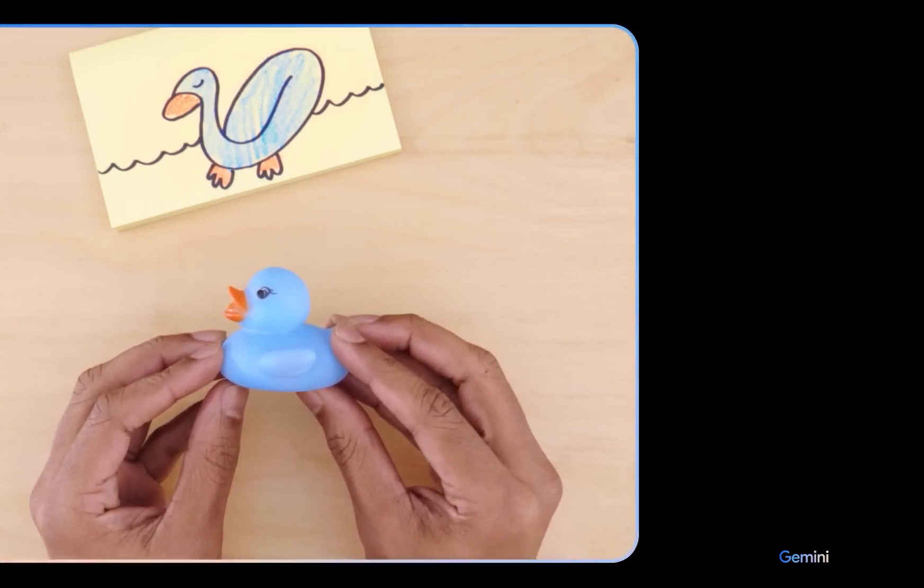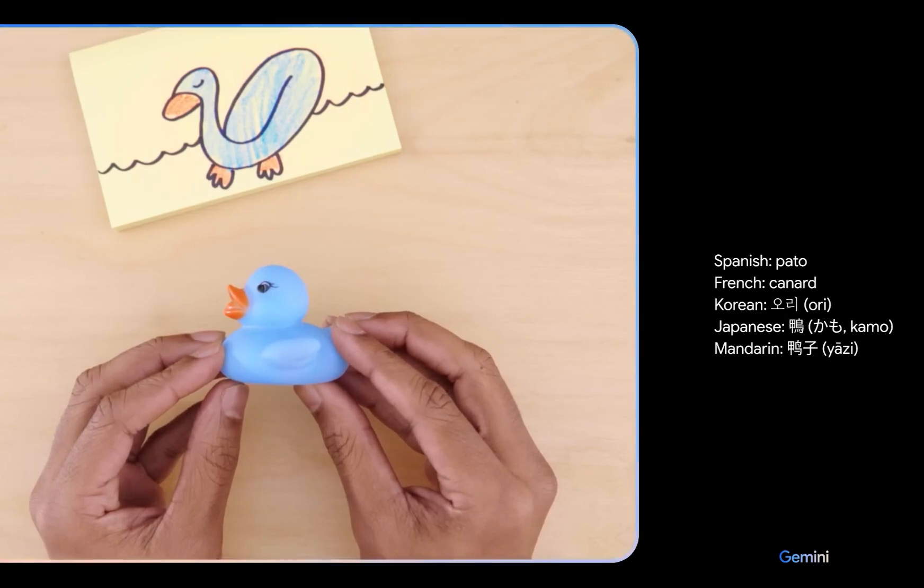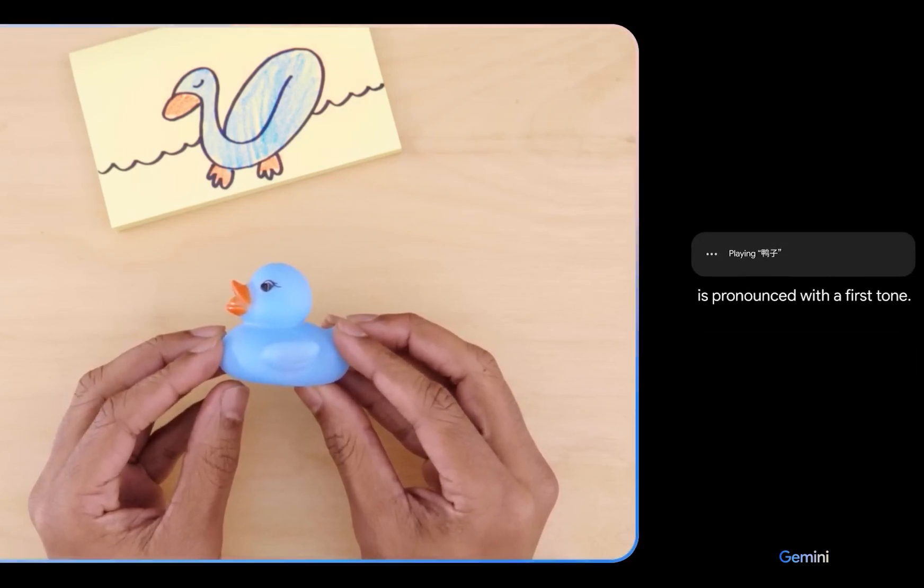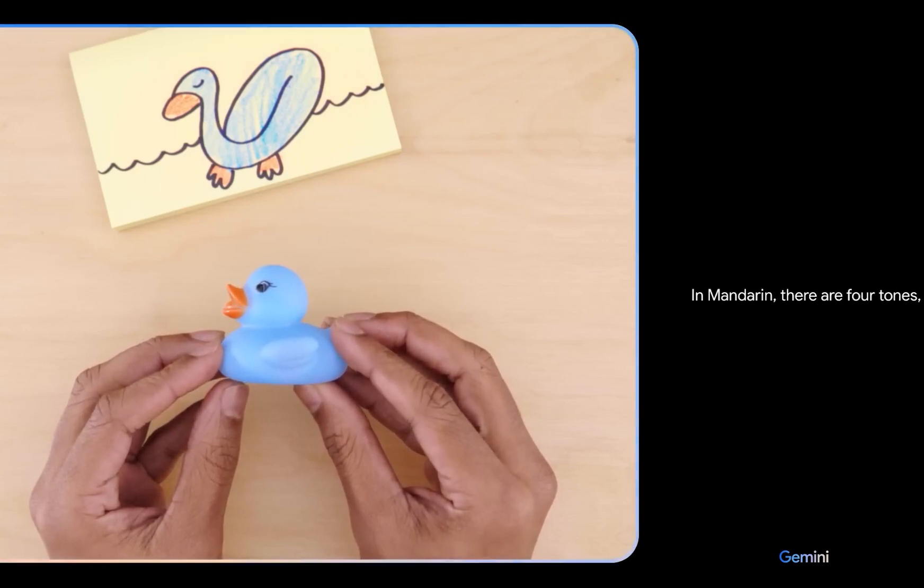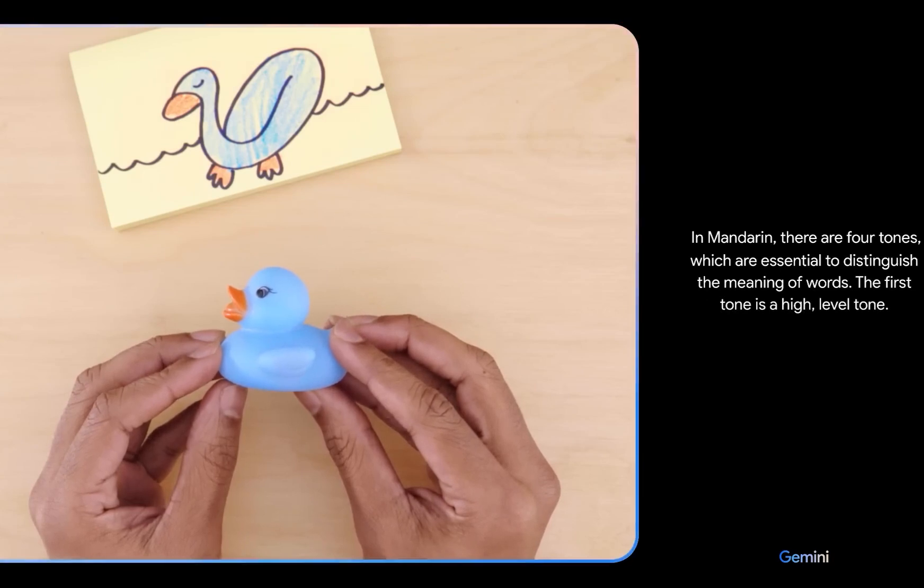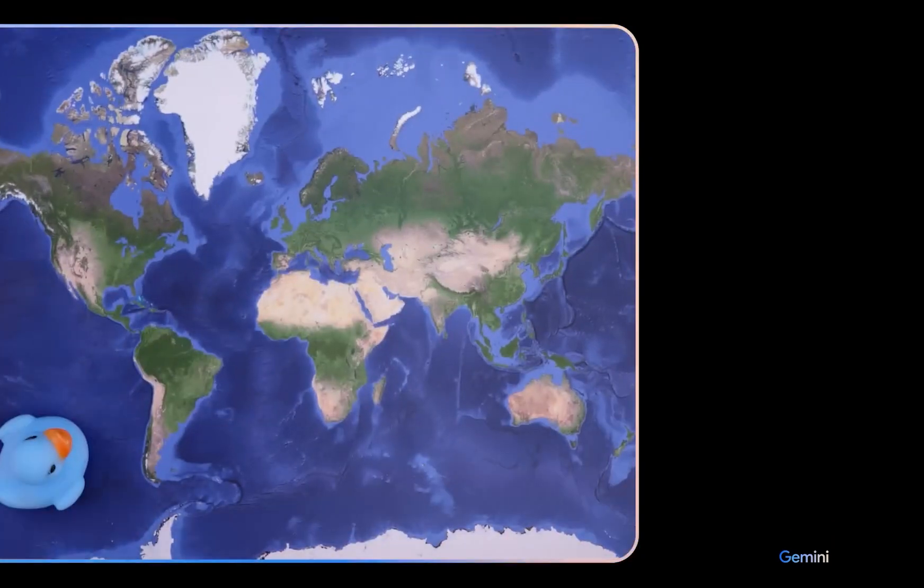Can you teach me how to say this in a different language and give me a few options? Can you explain how to pronounce the Mandarin one? It is pronounced with a first tone in Mandarin. There are four tones which are essential to distinguish the meaning of words. The first tone is a high-level tone.